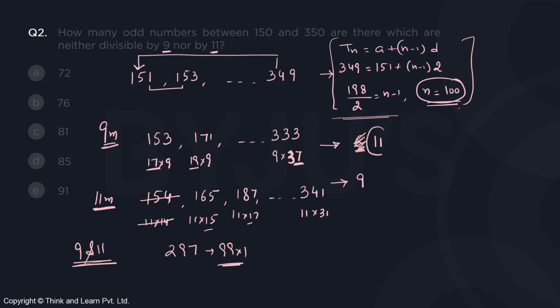So 11 numbers are divisible by 9, 9 numbers are divisible by 11. That makes 20. But this one number is counted twice, so ultimately 19 numbers are there which are divisible by 9 or 11.